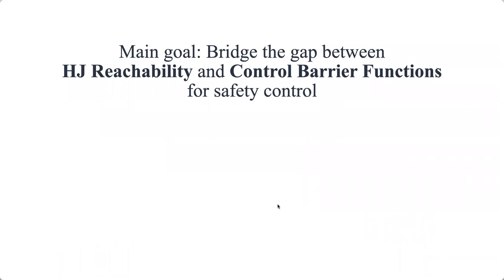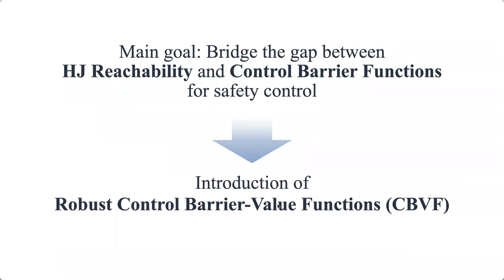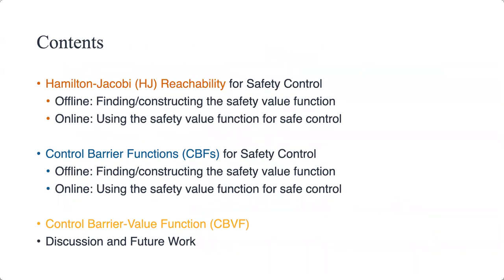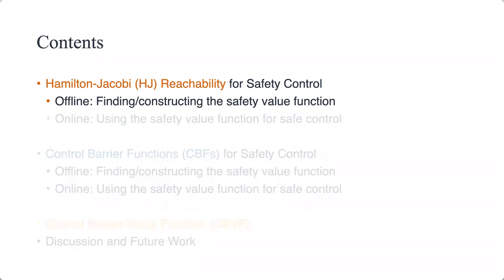The main goal is to bridge the gap between these two approaches and understand their relationship. What we ended up doing is introducing a mishmash of the two called a robust control barrier value function. The talk overview covers: Hamilton-Jacobi reachability offline and online, then control barrier functions offline and online, and finally this combined control barrier value function and discussion of future work.